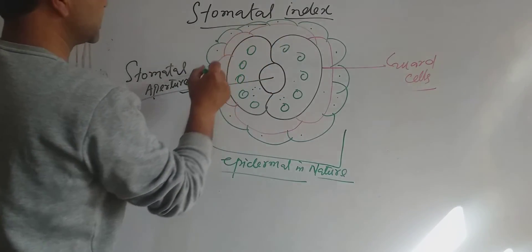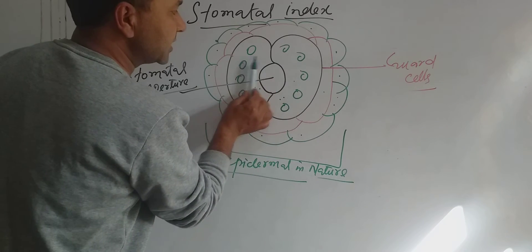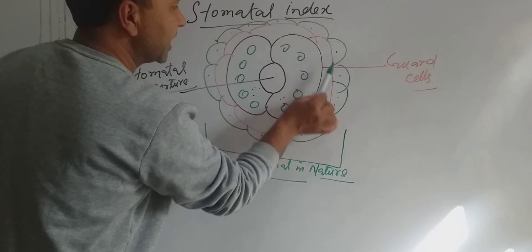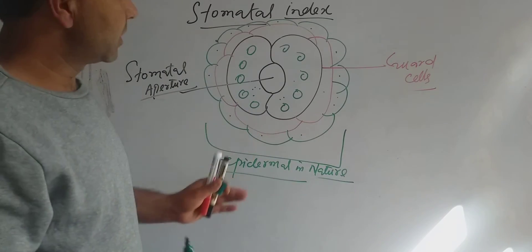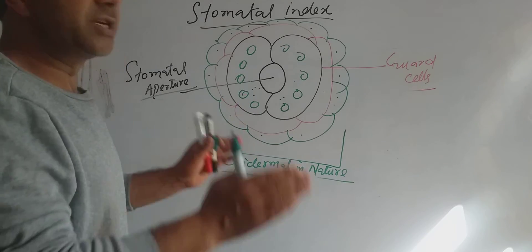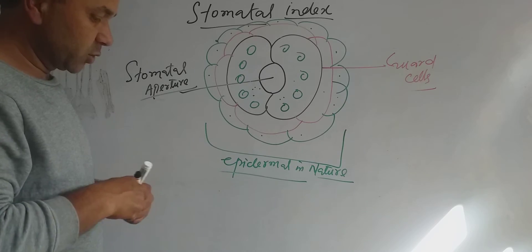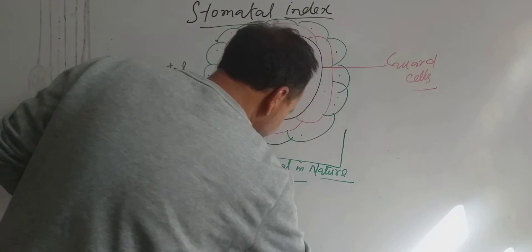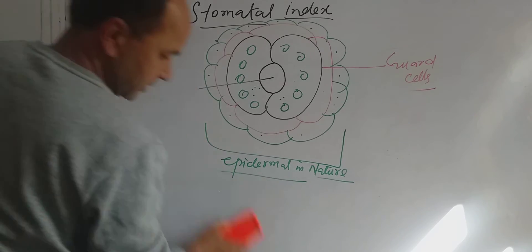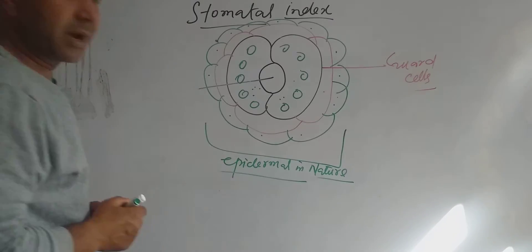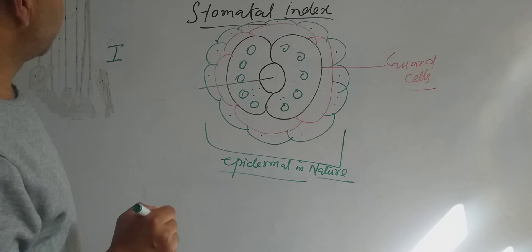Each stomatal apparatus — that is two guard cells, the stomatal pore, and the subsidiary cells — are surrounded by a definite number of epidermal cells per unit area. That character is specific for a particular species, and that is known as the stomatal index.